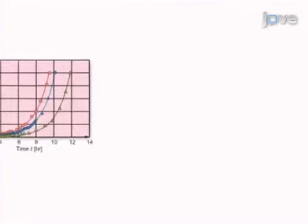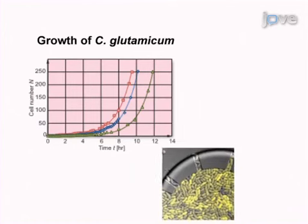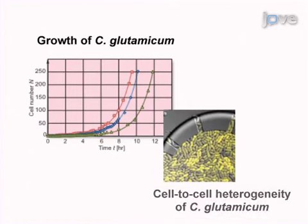Results are obtained from automated time-lapse microscopy showing the cultivation of an industrially relevant strain of Corynebacterium glutamicum, growth data, and cell-cell heterogeneity.